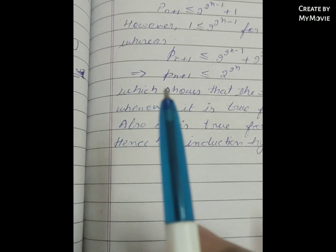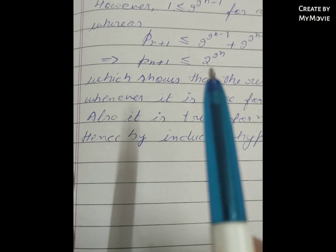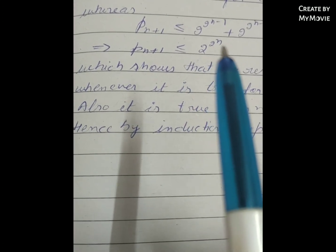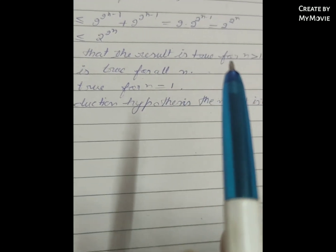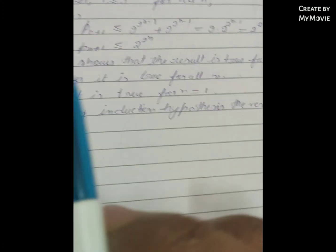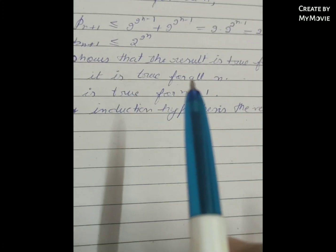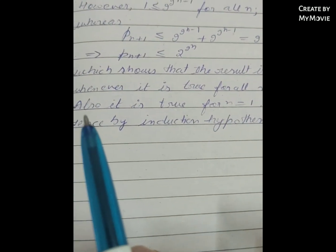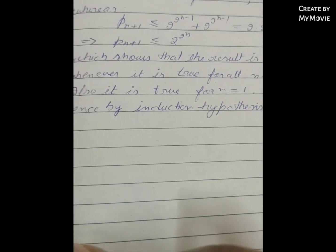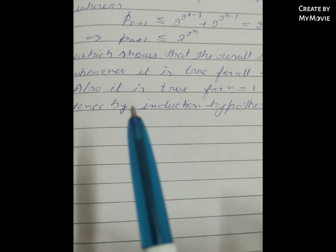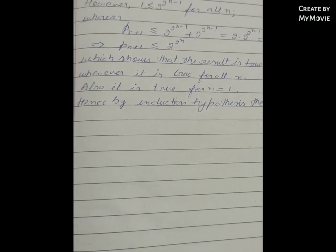This implies p(n+1) ≤ 2^(2^n), which shows that the result is true for n > 1 whenever it is true for all n. Since it is also true for n = 1, by the induction hypothesis the result is true for all n.